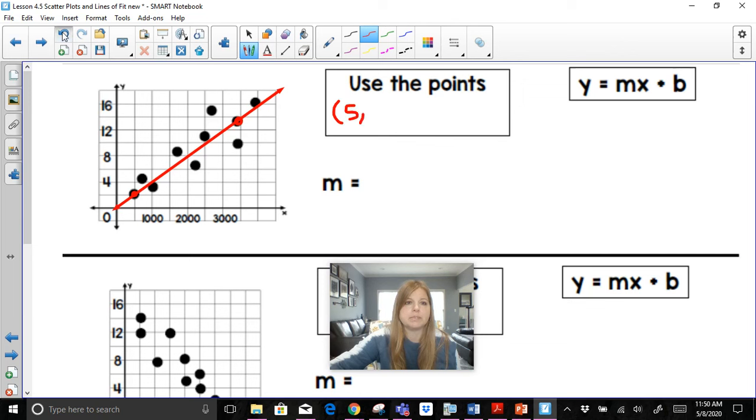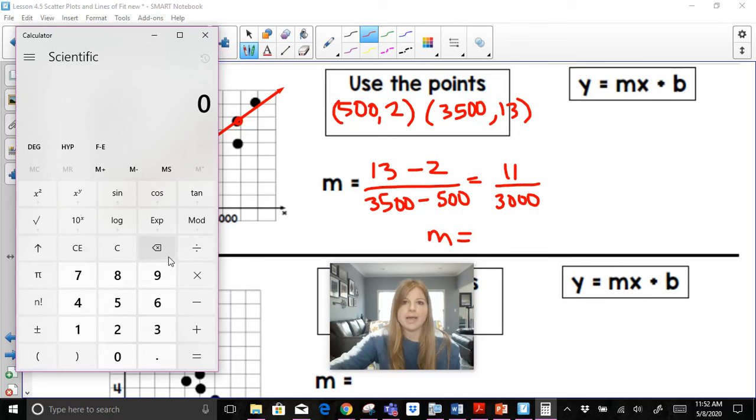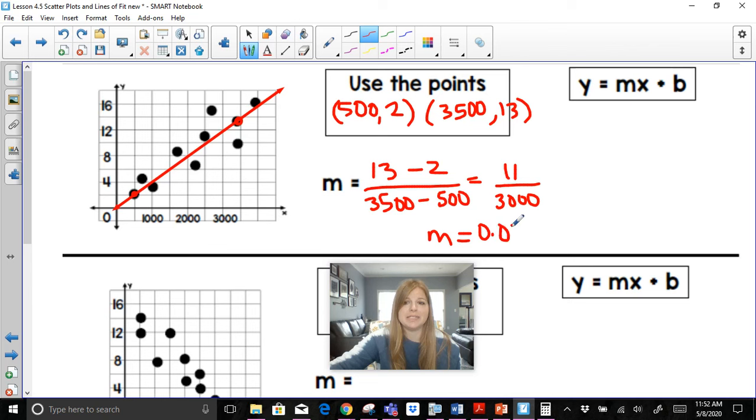So if I was to look at the two points I picked, the first one is at 500. And the second ordered pair I picked looks like it's at 3,500. My Y value is at, let's see, this would be 14, so I'll call it 13. Approximately. So if I wanted to write the equation of this line, I'd first have to calculate my slope. So 13 minus 2 over 3,500 minus 500. So I would end up getting 11 over 3,000. I'm going to pull up a calculator and I'm going to do 11 divided by 3,000. And I'm going to get a really small number, 0.00, and I'm going to round it to 4.